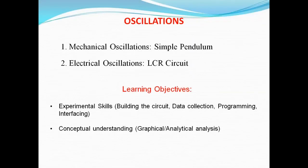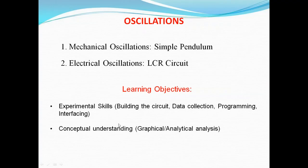The main concept to discuss is oscillations. There are two types: mechanical oscillations produced using a simple pendulum, and electrical oscillations produced using electrical components such as inductor, capacitor, and resistor. The learning objectives include students gaining experimental skills — building circuits, data collection, programming and interfacing hardware to a computer — and understanding concepts through graphical and analytical analysis.